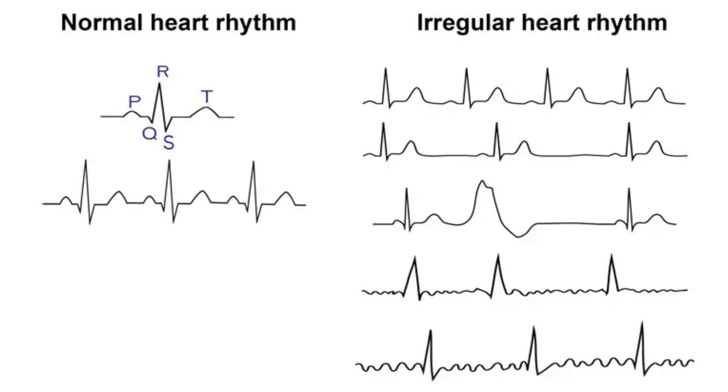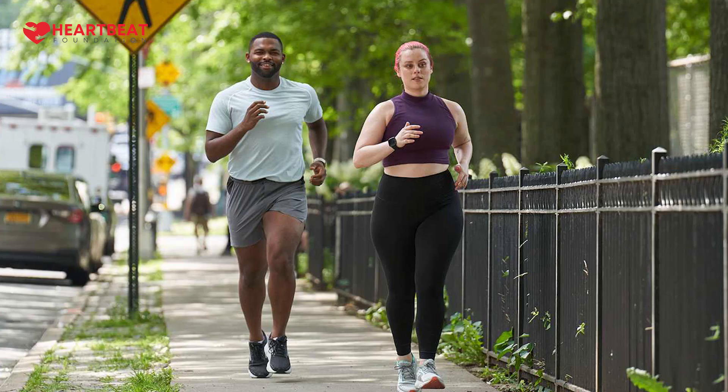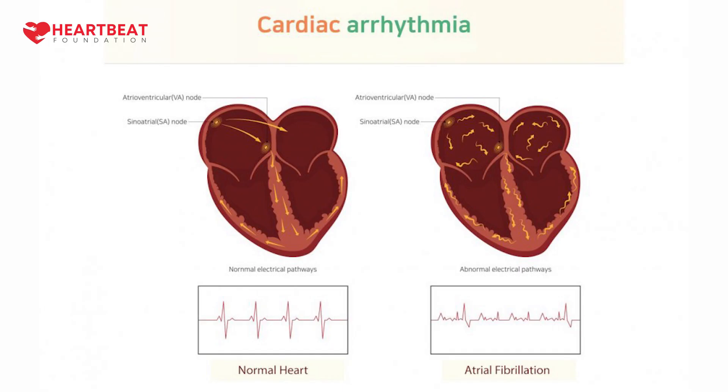The heart is known for its rhythm, and whenever this rhythm goes out of order — either becoming very slow, very fast, or irregular — we call it cardiac arrhythmia. Sometimes during exercise or running, we need to increase cardiac output, and if the heart rate is not increasing, the patient will develop symptoms that mark cardiac arrhythmia.